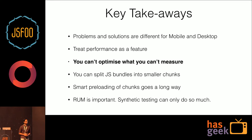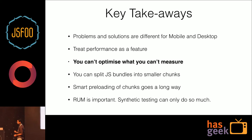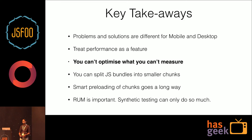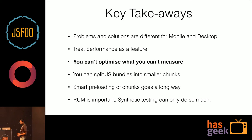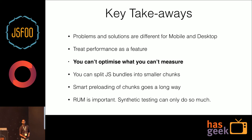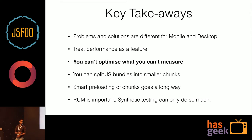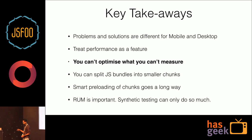The key takeaways are: you have to solution differently for mobile and desktop. You have to treat performance as a feature — it's not just a side effect or byproduct of what you're building. You can't optimize what you can't measure — you have to measure it again and again, every single thing. You can split JS bundles into smaller chunks and preload those chunks smartly, but don't block your main thread on that. And real user monitoring is important — synthetic testing doesn't always work as you expect.